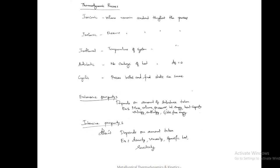Extensive and intensive properties: extensive properties depend upon the amount of substance — for example, mass and volume. If you add a molecule to a system, the volume increases; mass and volume depend upon the amount of substance. Intensive properties do not depend upon the amount — for example, density remains the same regardless of quantity, and viscosity also remains the same. These are the properties related to extensive and intensive classification in thermodynamics.